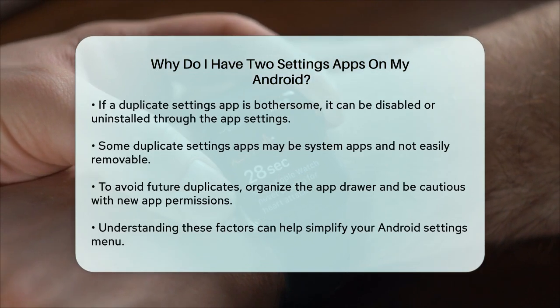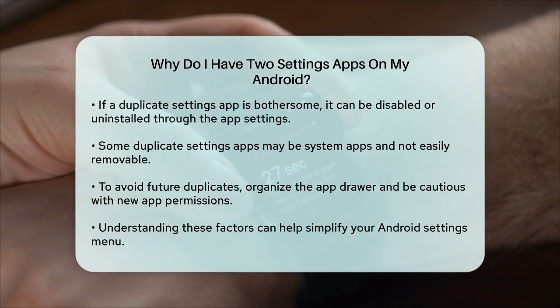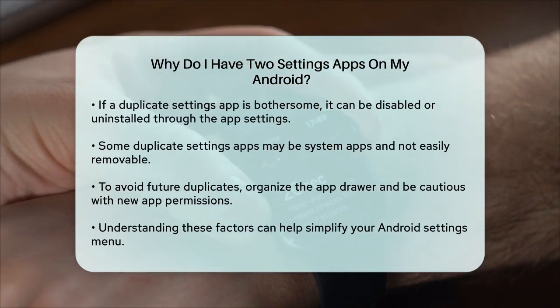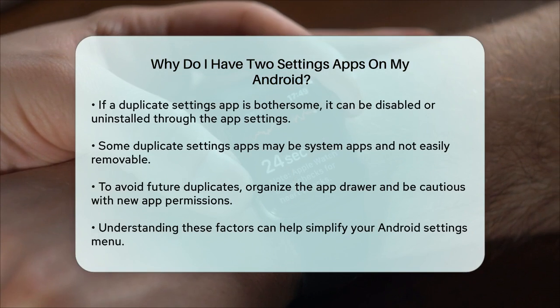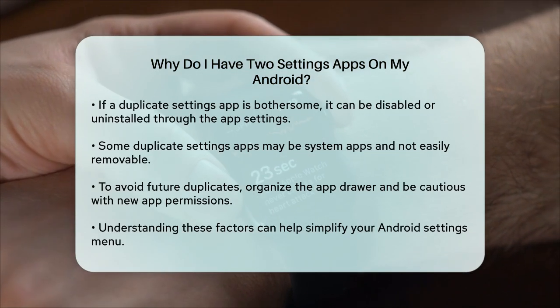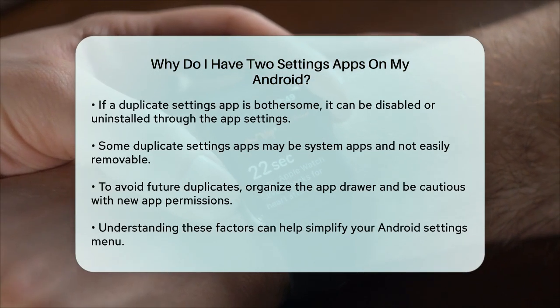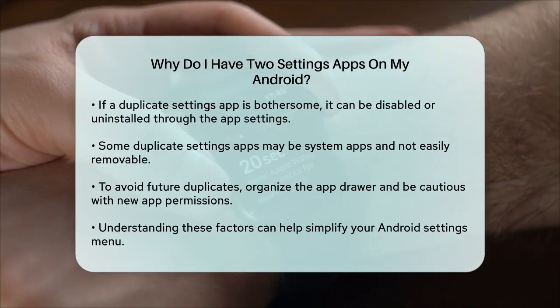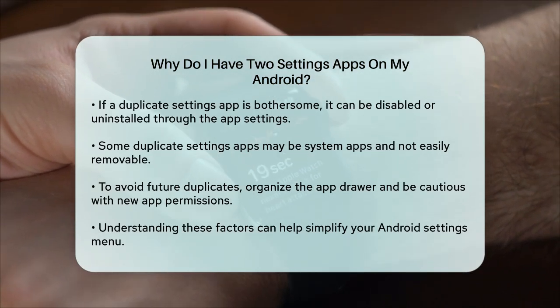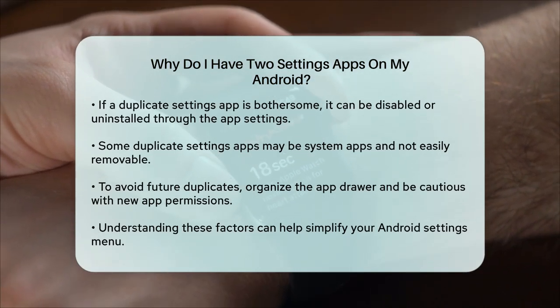If you want to remove it completely, follow the same steps but choose Uninstall or Remove. However, some duplicate settings apps might be system apps and cannot be uninstalled easily.